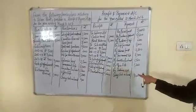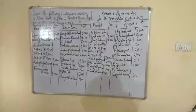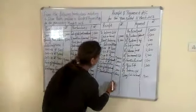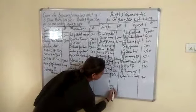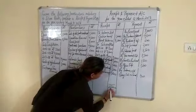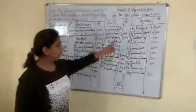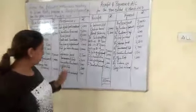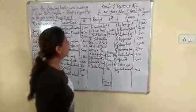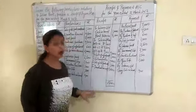After that, we get the total from each side. Our debit side total is rupees 25,000. When we total the credit side, it comes to rupees 18,400.